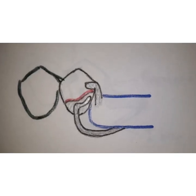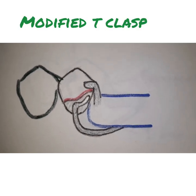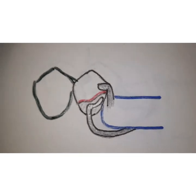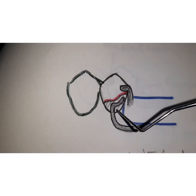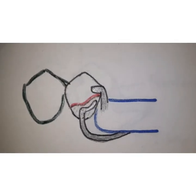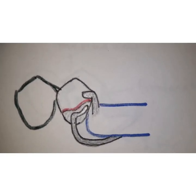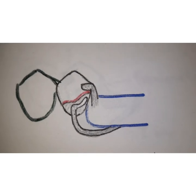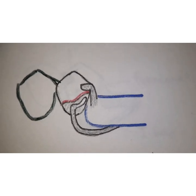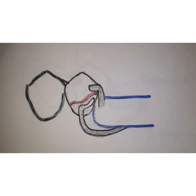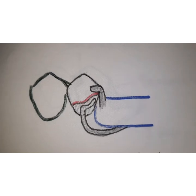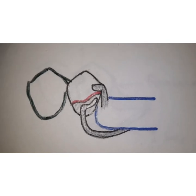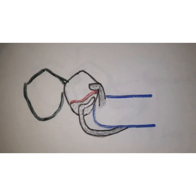The next type is the modified T clasp. Everything is similar to the T clasp, but in this case the non-retentive terminal is absent — only the retentive arm is present. This is used in cases where aesthetics are of prime importance, such as for canines or premolars. However, this design compromises the basic bracing requirement because it neither braces the tooth nor provides a three-point contact. The stability of the prosthesis is compromised, which is the reason we avoid using the modified T clasp.